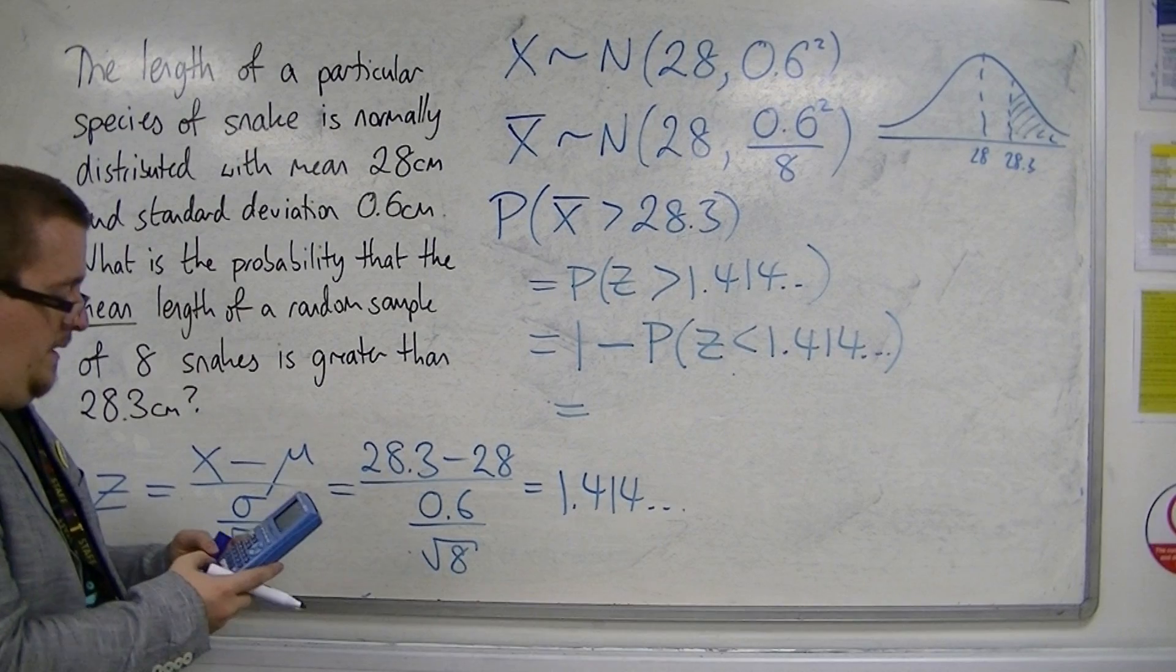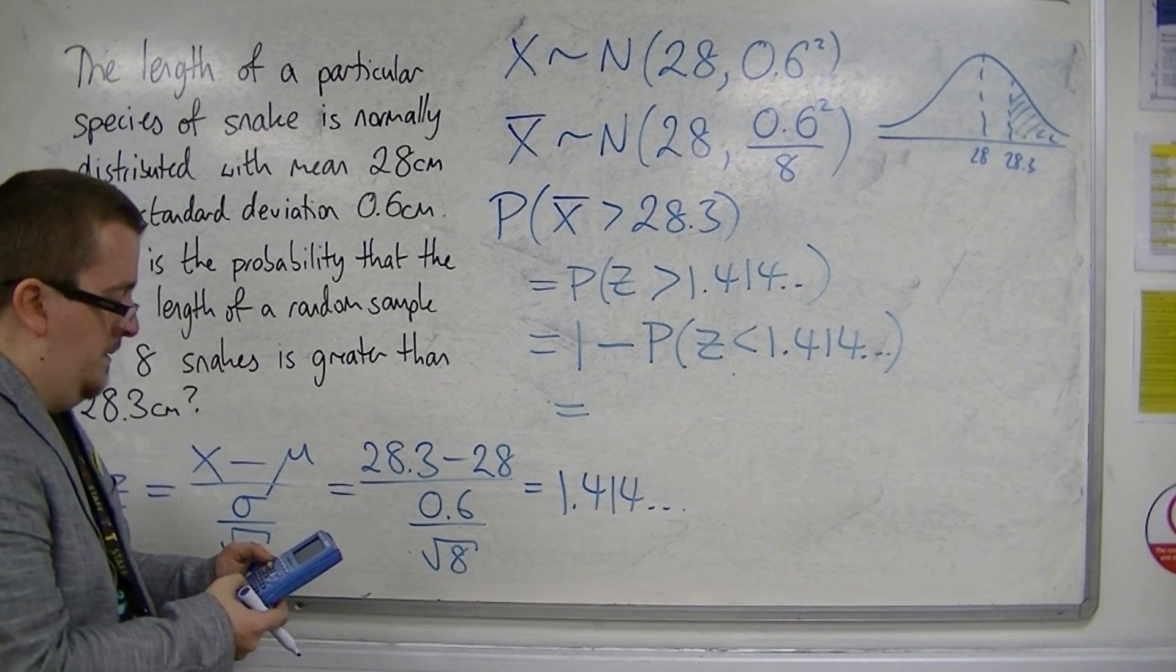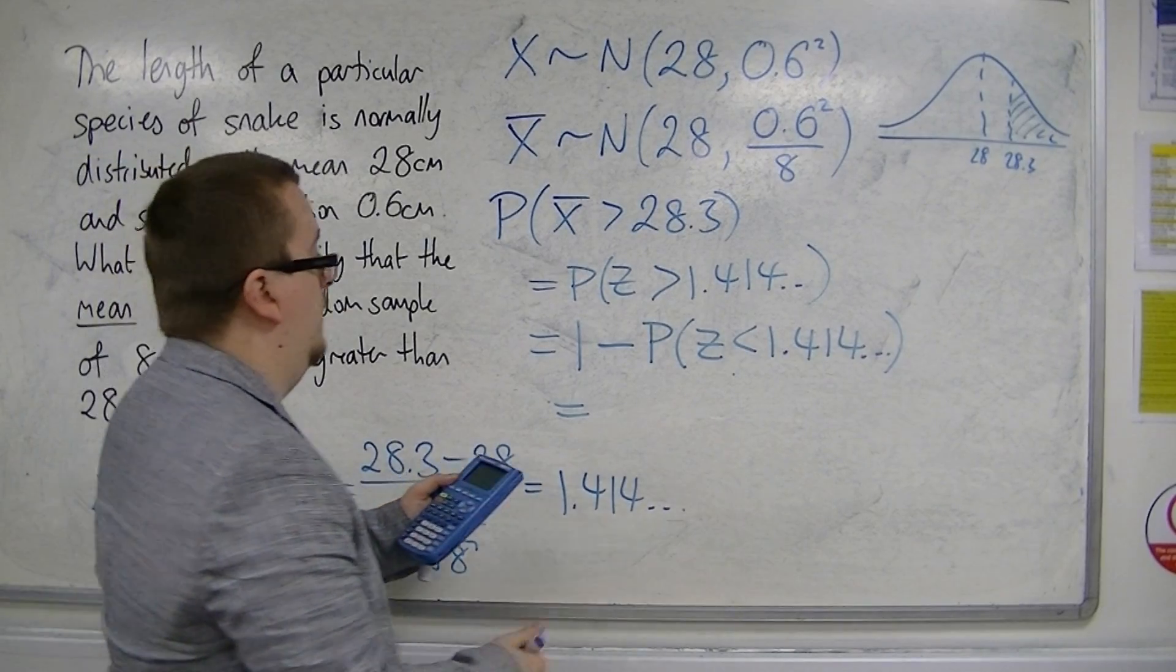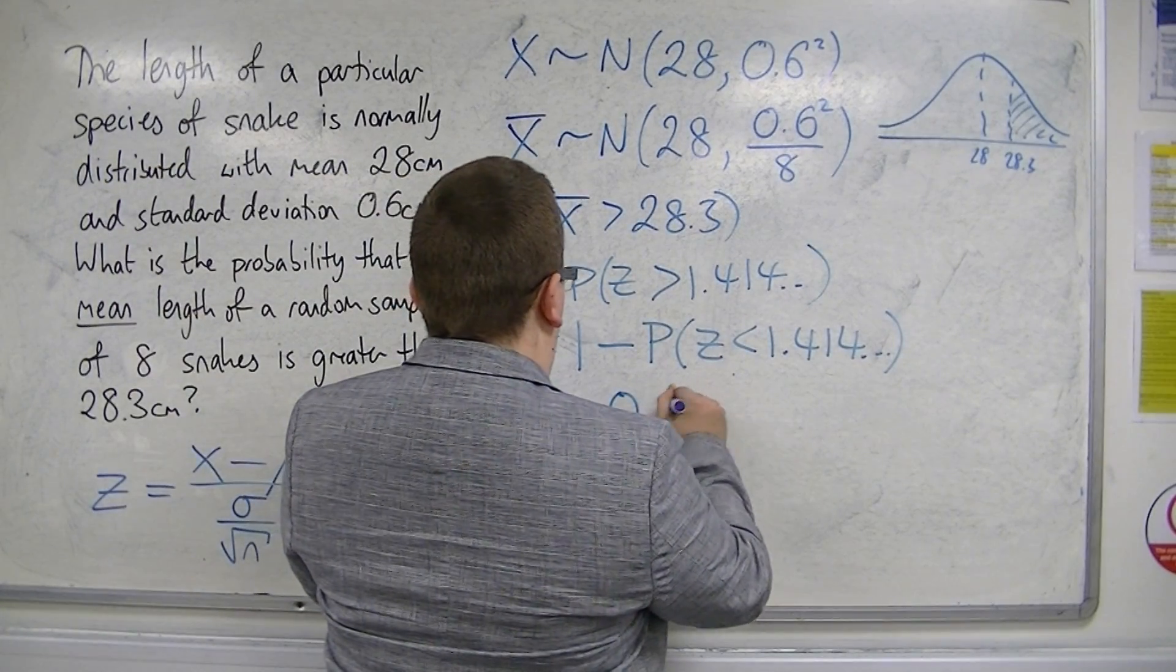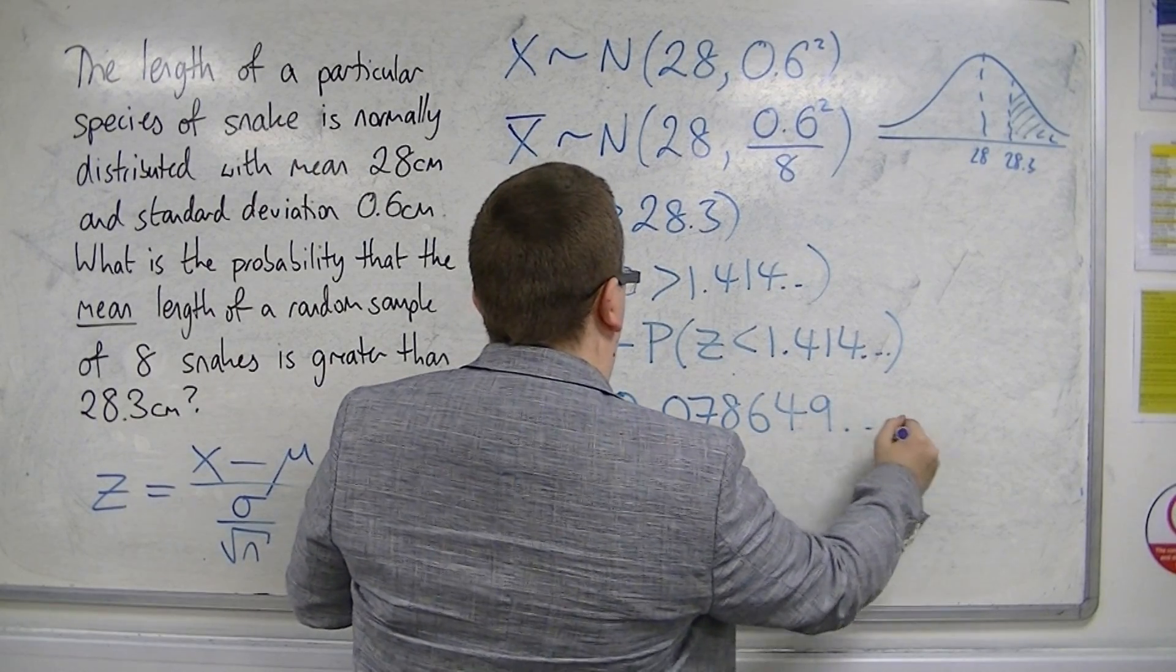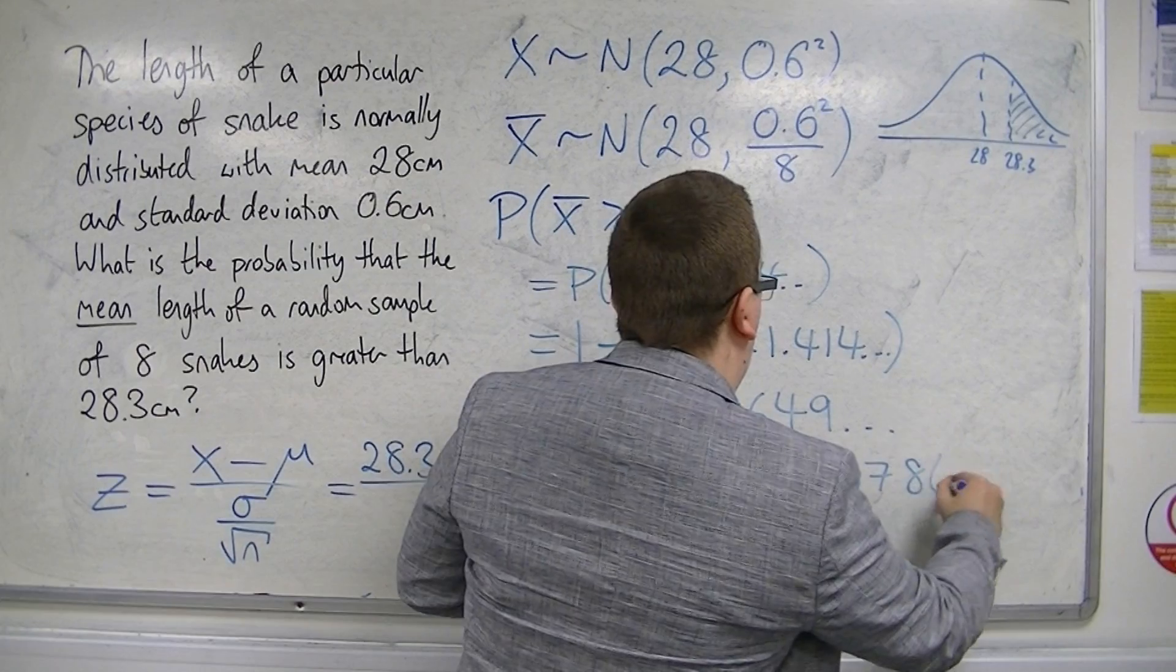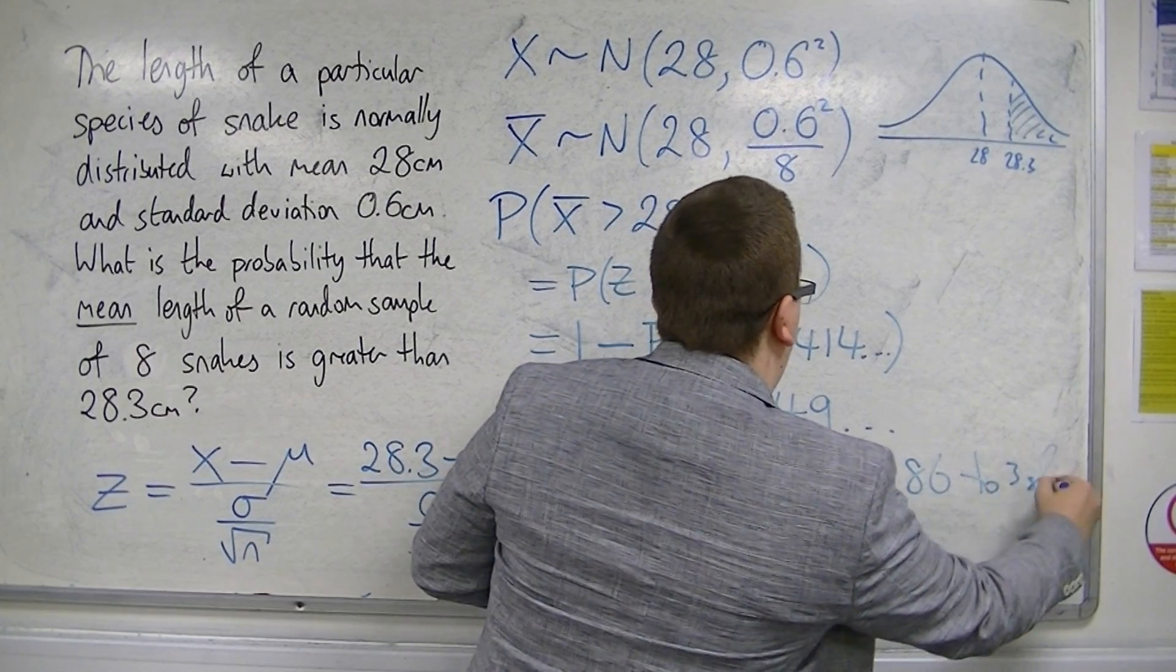From minus 10 up to—sorry, use the answer key—is 0.078649 and so on. So 0.0786 to 3 significant figures.